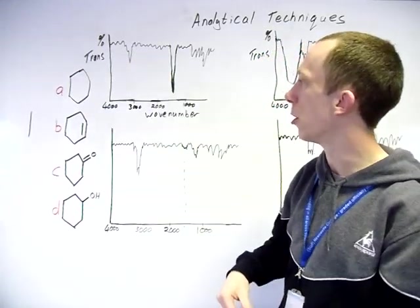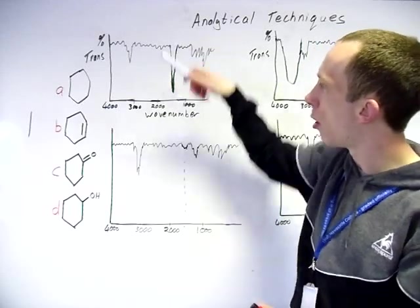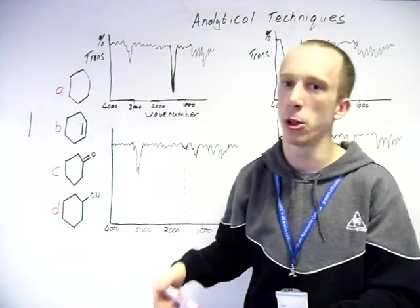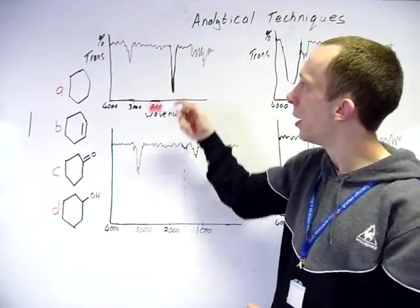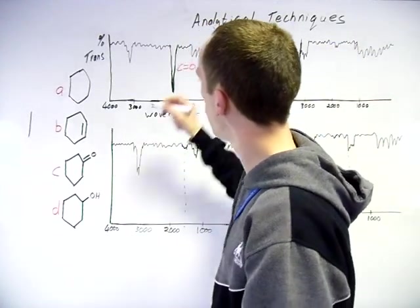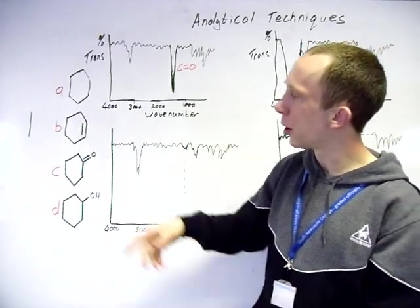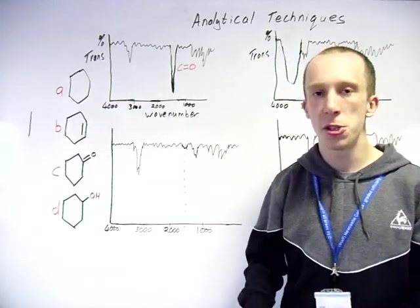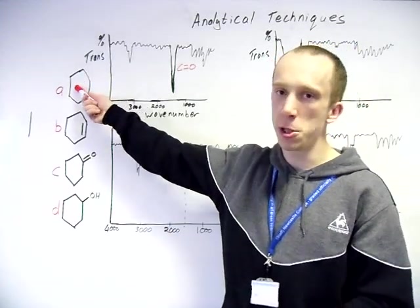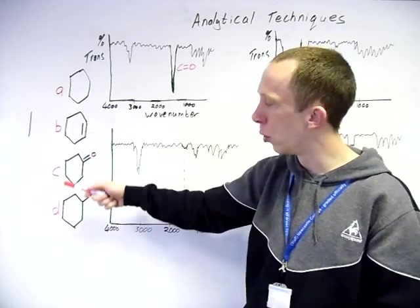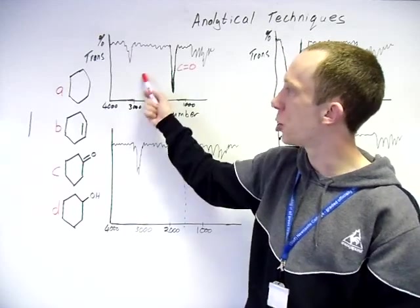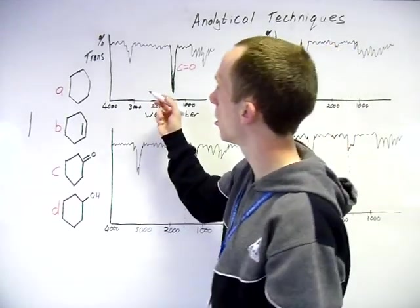Look at this spectra first. We've got a nice strong sharp peak here around the 1650 region. Again, apologies if it looks a little bit off. This is characteristic of a C double bond O, the carbonyl. What you would do is you would look across your compounds here and see which one of them actually has that bond. Does A have a C double bond O? No. B? No. C? Yes. D? No. So the only option there which could match up to this spectra is compound C.